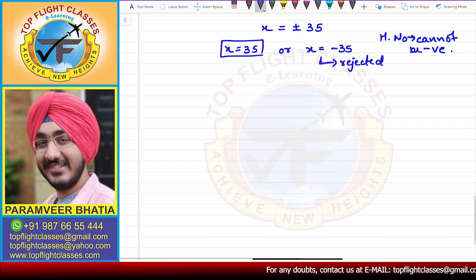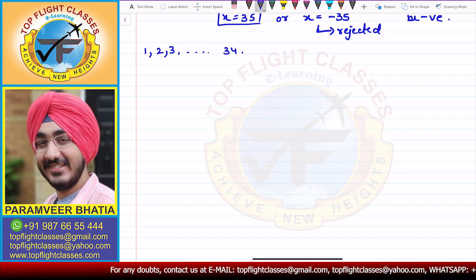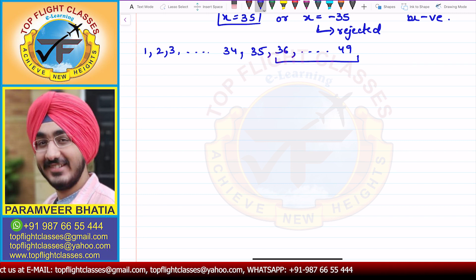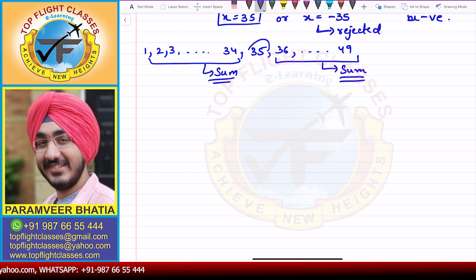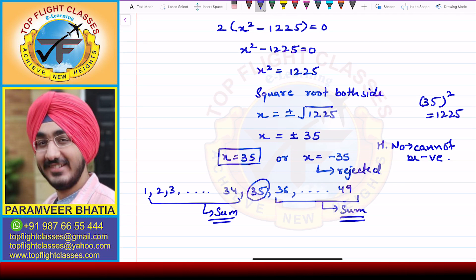You can also verify this: calculate the sum of 1, 2, 3, ... up to 34, and then calculate the sum of 36, 37, ... up to 49. When you equate these two sums, they will be equal, confirming that x = 35 is correct. So we get that x = 35, which is what is required in the question.